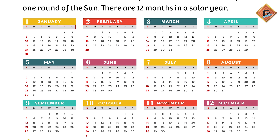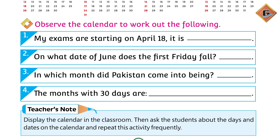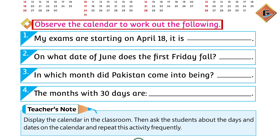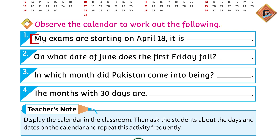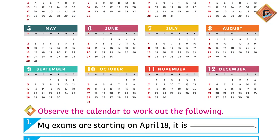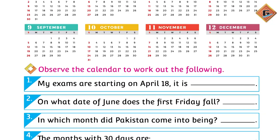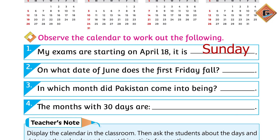If you observe these carefully, you will be able to answer the following questions. Observe the calendar to work out the following. The first one is: my exams are starting on April 18. Hum April ke month mein jaenge aur 18 date ko dekh ke ke woh kis din hota hai. Where is 18? Very good — it is on Sunday. It is strange, but his exams are going to start on Sunday.